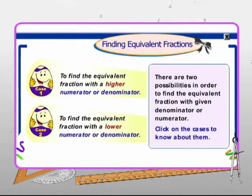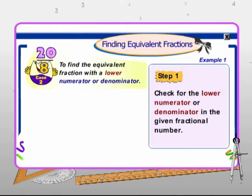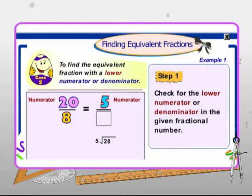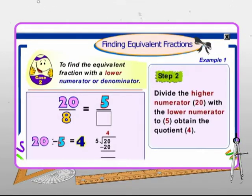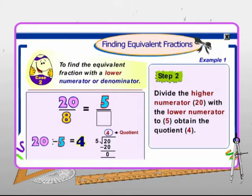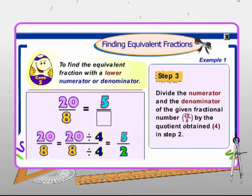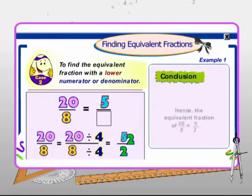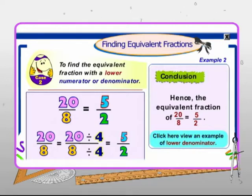Now consider case two: to find the equivalent fraction with a lower numerator or denominator. In step one, check for the lower numerator or denominator in the given fractional number — here the lower numerator is 5. In step two, divide the higher numerator, that is 20, with the lower numerator, that is 5, to obtain the quotient — here 4 is the quotient. In step three, divide the numerator and the denominator of the given fractional number, 20 upon 8, by the quotient obtained, that is 4. Hence the equivalent fraction of 20 by 8 is 5 by 2.